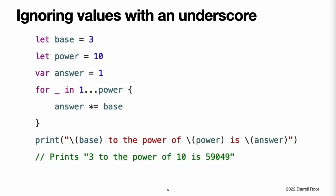If you do not need the value from a sequence, you can ignore the values by using an underscore in place of a variable name. This example calculates the value of one number to the power of another number — in this case, three to the power of ten. It multiplies a starting value of one (three to the power of zero) by three ten times, using a closed-range that starts with one and ends with ten. The underscore character used in place of a loop variable causes the individual values to be ignored and does not provide access to the current value during each iteration of the loop.